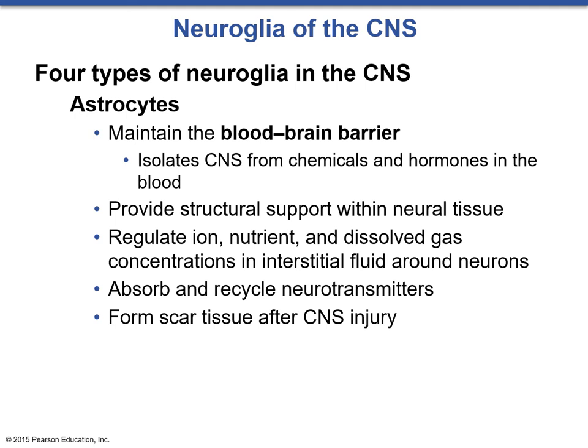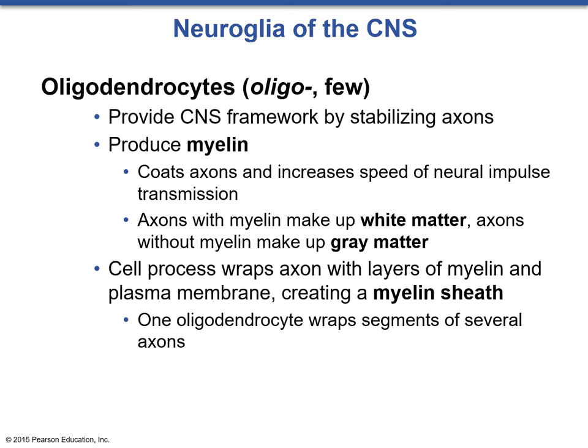Oligodendrocytes serve a similar function to Schwann cells in the peripheral nervous system. They produce myelin, provide the CNS framework by stabilizing axons, and can stabilize multiple axons together. Myelin coats axons and helps increase the speed of neural impulses — action potentials — via saltatory conduction. Axons covered in myelin make up white matter; axons without myelin or cell bodies are called gray matter. One oligodendrocyte can wrap several segments of axons with layers of myelin and plasma membrane, forming the myelin sheath.